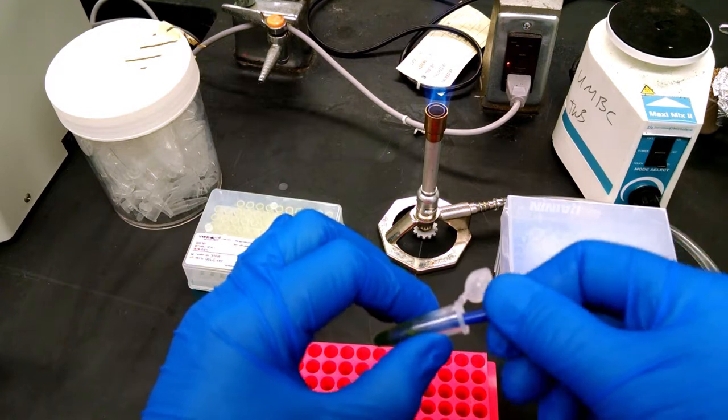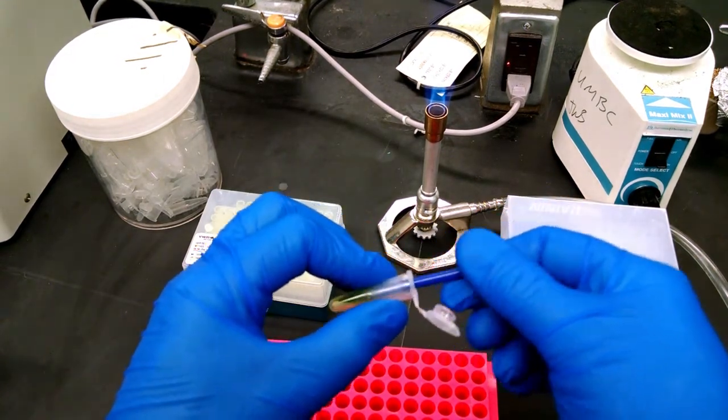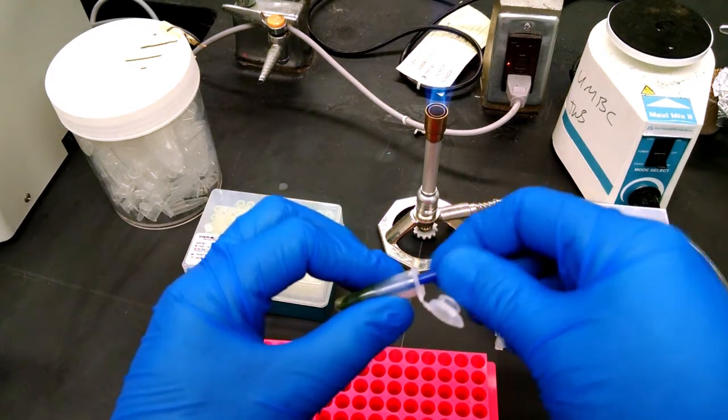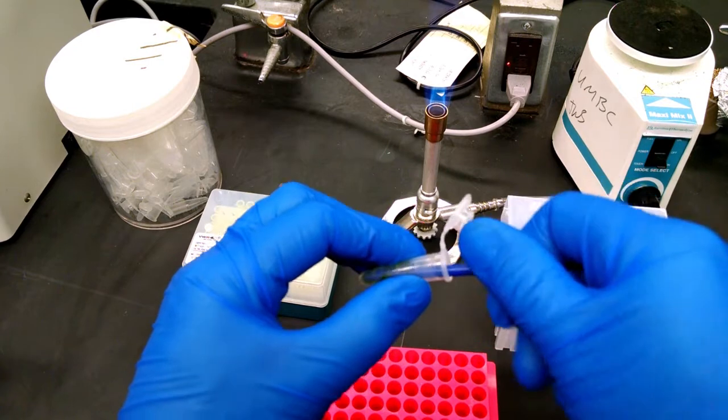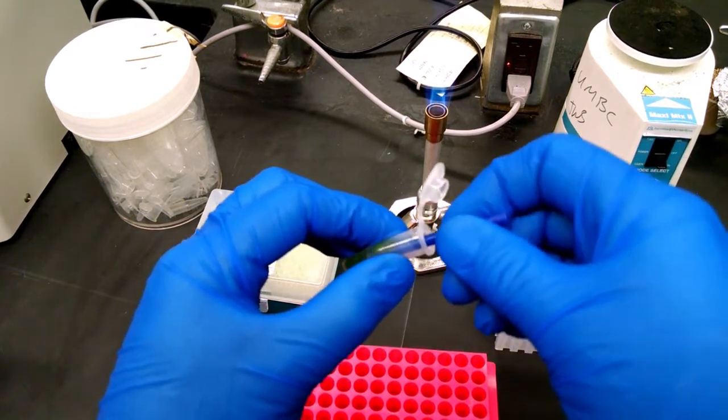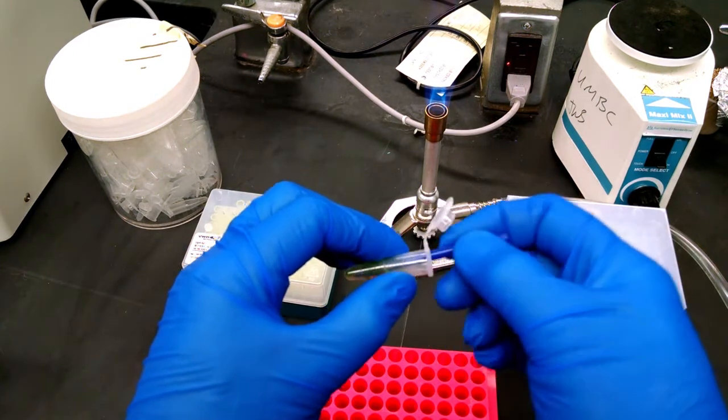Do this for at least a good two minutes, up and down, grinding it on the sides of the tube until you get these fragments as small as possible.